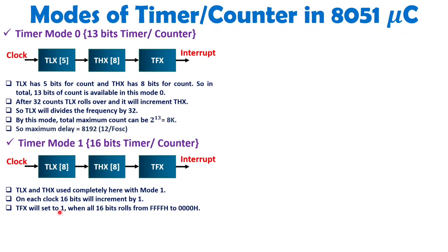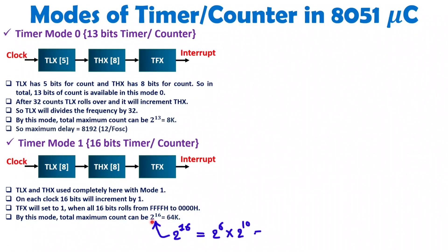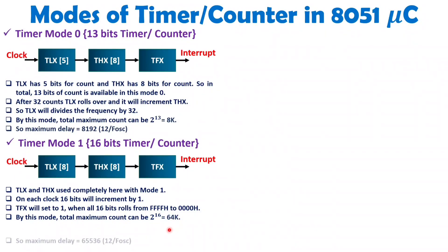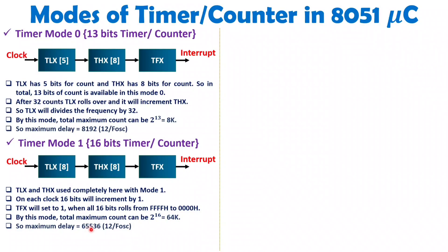TFX is set to 1 whenever rollover happens from all 1s to all 0s, meaning in hex from FFFF to 0000. The maximum count is 2 to the power 16, which is 64k. How? 2 to the power 16 equals 2 to the power 6 times 2 to the power 10; 2 to the power 10 is k and 2 to the power 6 is 64, so the maximum count is 64k, that is 65536. The maximum delay is 65536 multiplied by the delay of one clock, which is 12 divided by F_osc.